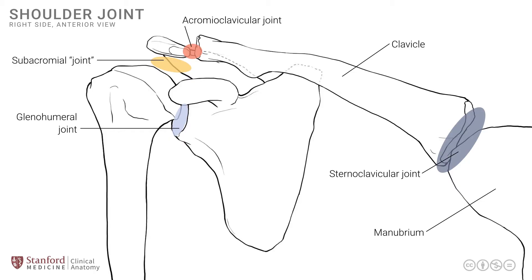From a functional standpoint, the blade of the scapula forms a loosely defined articulation known as the scapulothoracic joint, where the blade of the scapula rotates around the rib cage. This provides a significant amount of shoulder movement. While the glenohumeral joint is the shoulder joint proper, the scapulothoracic joint participates in shoulder movement, accounting for about one-third of total movement, with only two-thirds occurring at the glenohumeral joint.